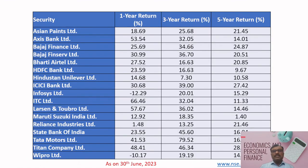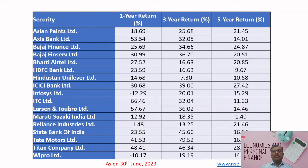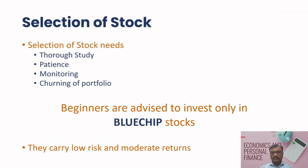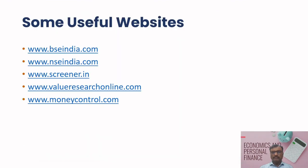Here is the performance of some blue-chip stocks over the last five years. The first column shows one-year returns, the second shows three-year returns, and the last shows five-year returns — all on a yearly basis. For example, over the last three years, Asian Paints has given almost 26% return on a yearly basis. These are some of the websites that can help you with stock selection.